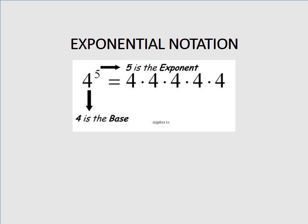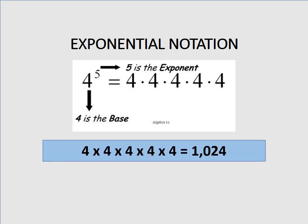The answer would be 1,024. The final answer is 1,024 because you multiply number 4 by itself 5 times. The solution is written as: 4 times 4 times 4 times 4 times 4 equals 1,024.